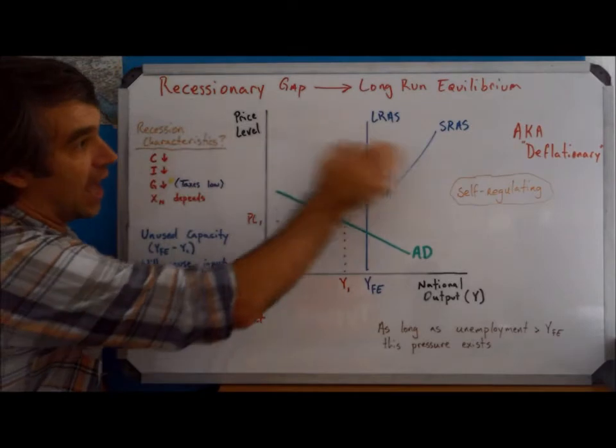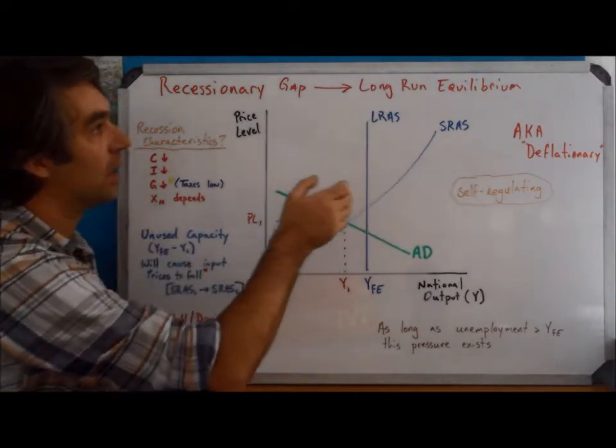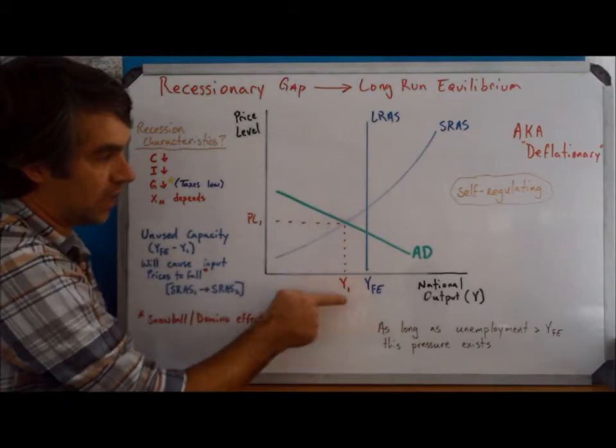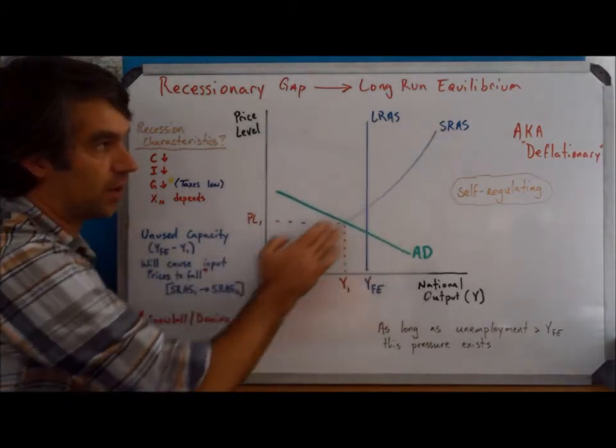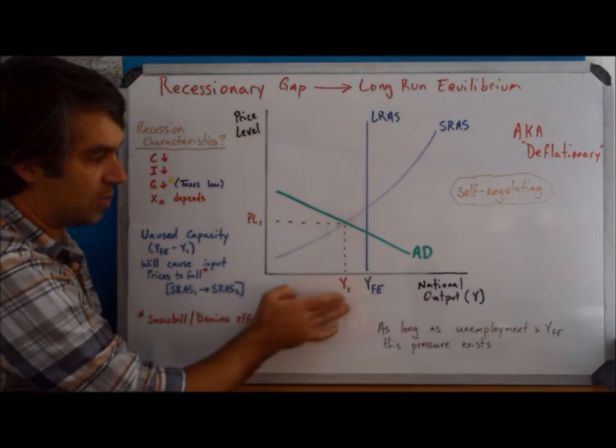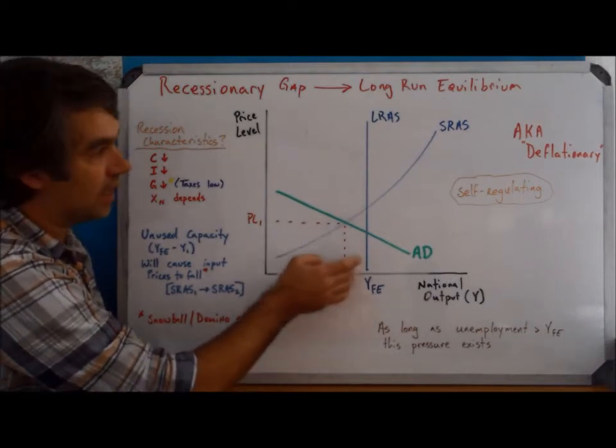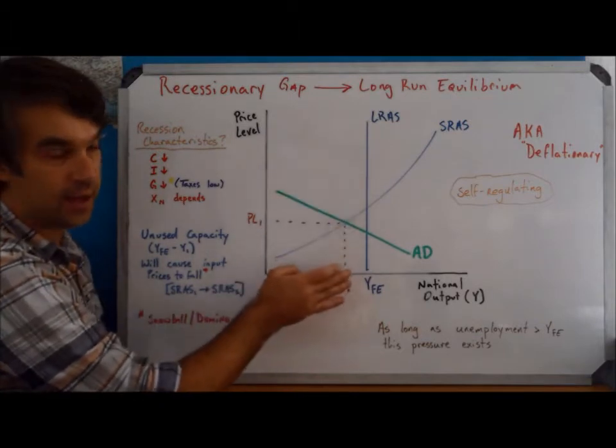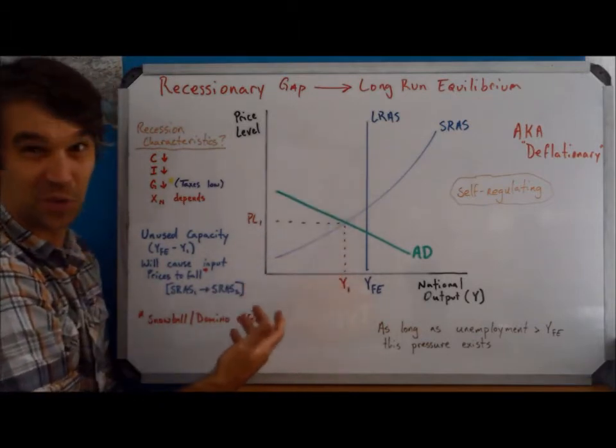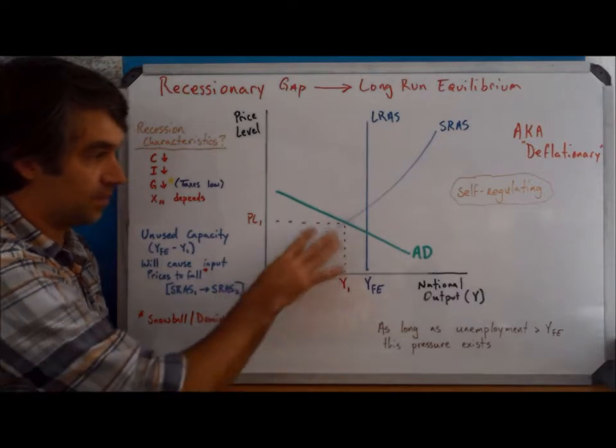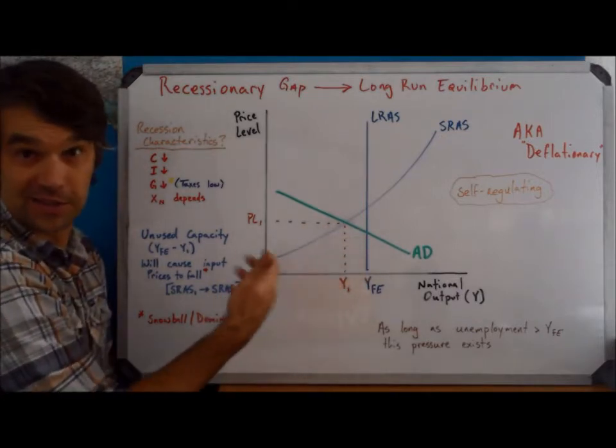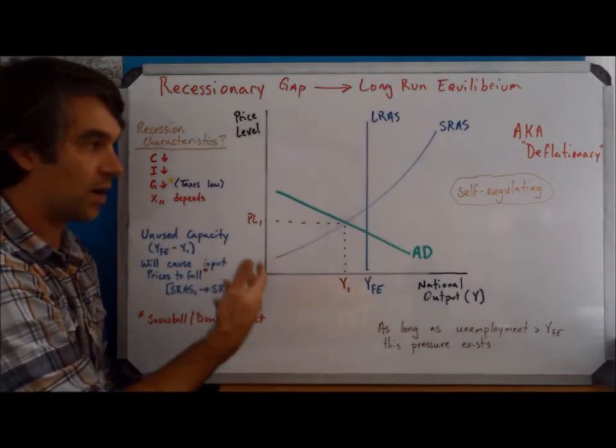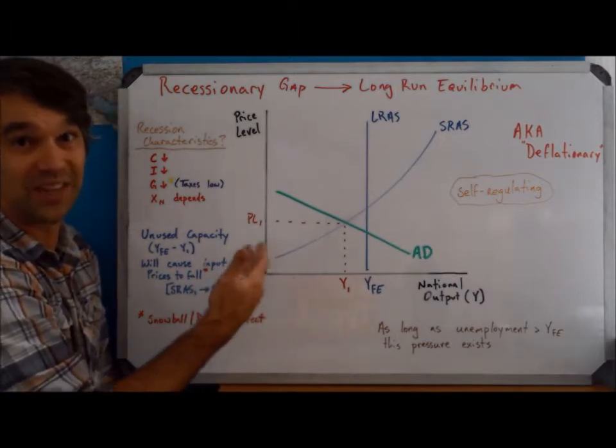Remember a recessionary gap or a deflationary gap. The point is that we're not at a place where our short-run equilibrium, where aggregate demand meets short-run aggregate supply, that equilibrium point Y1 is not occurring on long-run aggregate supply. In this case, it's not really important to think about long-run equilibrium. The point is, we don't have it. We only have short-run equilibrium, and we're not in a point of equilibrium in the long run.